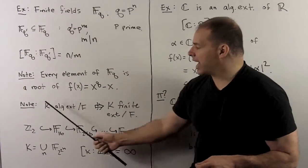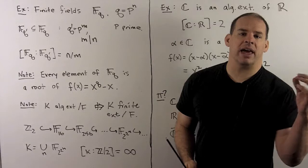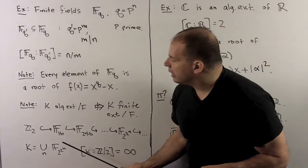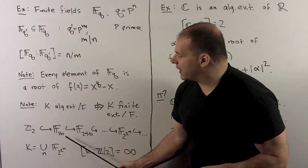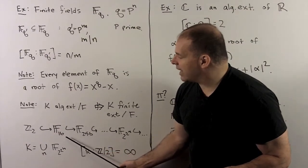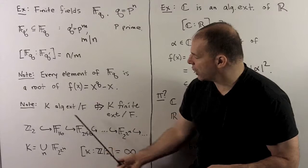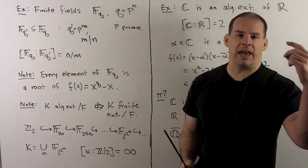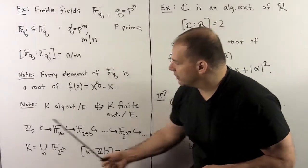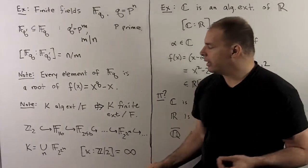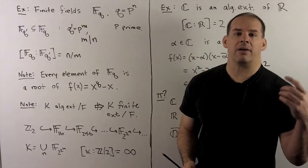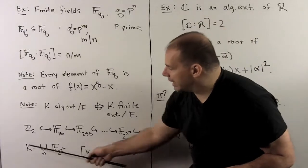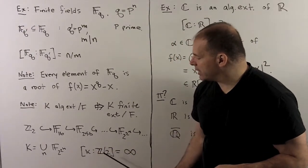One thing to note: k is an algebraic extension of f does not mean that k is a finite extension of f. For instance, working off of this example, I could take Z mod 2, sitting inside the finite field with 16 elements, which sits inside the finite field with 256 elements, and so on. The pattern I'm using is the finite field with 2 to the 2 to the n elements. If I take the union of all these using the inclusions, that gives me a field with infinitely many elements. Every element lives in some finite field, so they're all algebraic over Z mod 2. So this is an algebraic extension, but its degree over Z mod 2 is infinite.